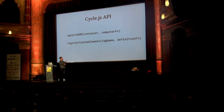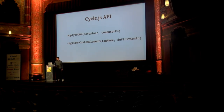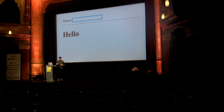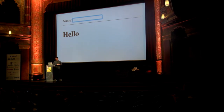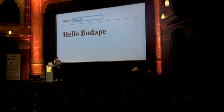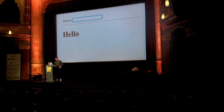The API is basically two functions. For this presentation we just need applyToDOM, where we give the computer function and say where in the DOM it will live — the container. Let's see how we can use this. Imagine a basic hello world program with one big input field where you insert the name, and the header greets the name.